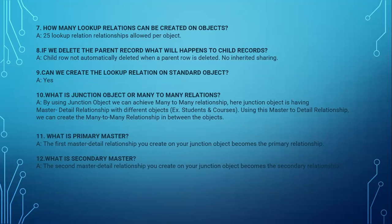If we delete the parent record in a look-up, what will happen to child records? The child record is not automatically deleted when a parent row is deleted — there is no inherited sharing. Only the parent object-related field is cleared, so if we delete a teacher record, the teacher name will not appear in the child record. Can we create a look-up relation on a standard object? Yes. What is a junction object or many-to-many relationship? By using a junction object, we can achieve a many-to-many relationship. The junction object has a master-detail relationship with different objects. For example, student and courses — using master-detail relationships we can create many-to-many relationships between the objects.